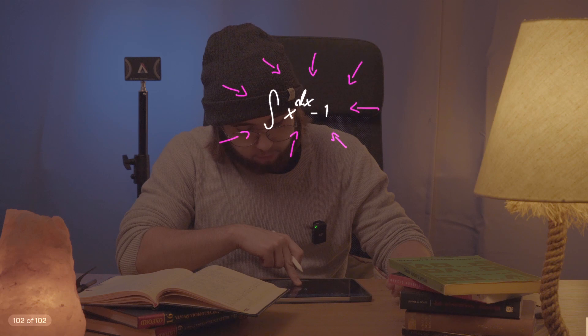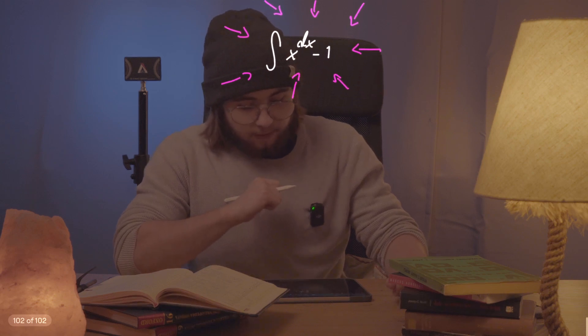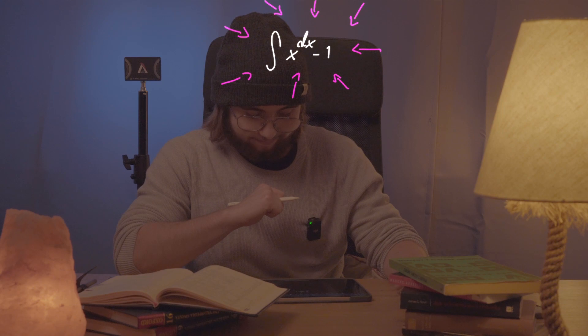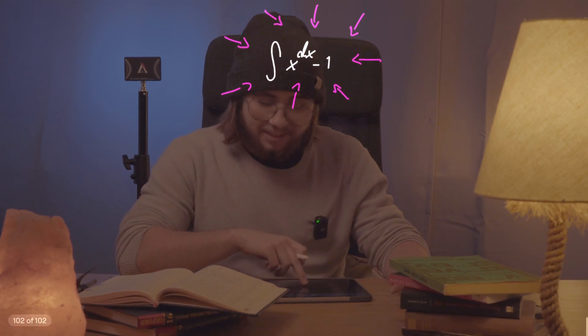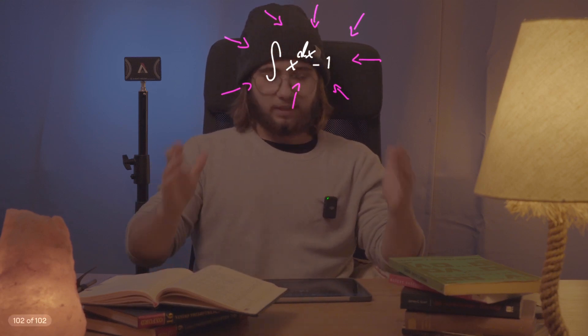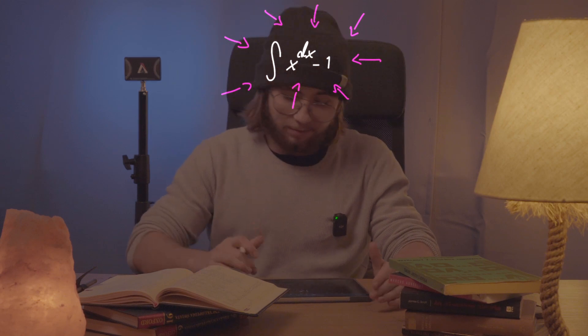We are supposed to find the anti-derivative of x to the power of dx minus one. So does this stuff even make sense? Well, it doesn't. It absolutely doesn't because, well, you see,